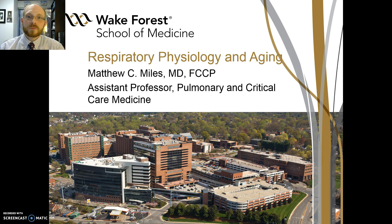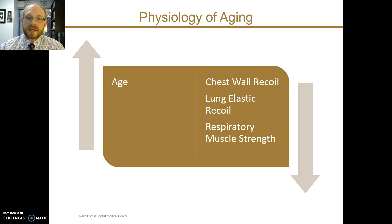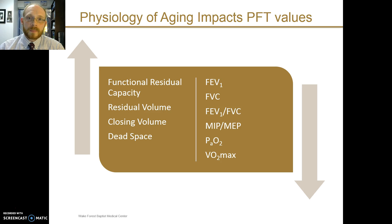Thanks for watching. I want to talk about respiratory physiology and changes that occur during aging. As age increases, chest wall recoil decreases, lung recoil decreases, and respiratory muscle strength decreases. This results in predictable changes to pulmonary function tests, including increases in functional residual capacity and residual volume, which happen partly through an increase in the closing volume of the airways. There is also an increase in dead space ventilation.